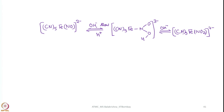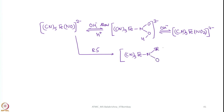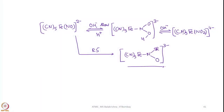Let us consider the same starting metal complex and add RS⁻ so that we can make a better comparison between these two reactions. With thiols, when you treat the nitrosyl compound with thiols, it turns red color, and that is used for the detection of RS⁻ species or RS⁻ anions. From that point of view, this is a very important reaction.